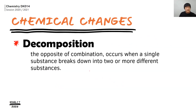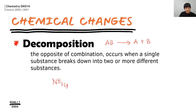Another type of chemical change is decomposition. Decomposition is when one substance decomposes and forms two or more different substances. For example, AB decomposes to become A plus B. A simple decomposition reaction: ammonia gas can decompose to form nitrogen gas plus hydrogen gas. Balance the equation, and that is a decomposition reaction.